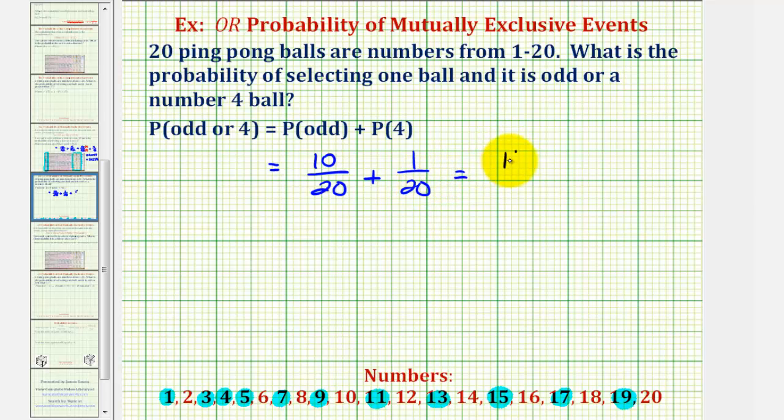So this sum would be eleven twentieths. And again, this should make sense. There are eleven favorable ways out of twenty to pick a ball that is odd or four.